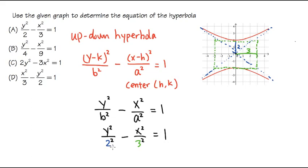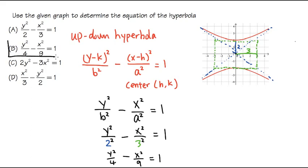At the end, don't forget you have the square on the bottom, so we multiply it out. We will have y squared over 4, because 2 squared is 4, minus x squared over 9, because 3 squared is 9, and this equals 1. So this is the equation for this graph, and the answer is choice B. The y part subtracts the x part — this is how we get the up and down hyperbola. If it were going left or right, then the x part would go first.